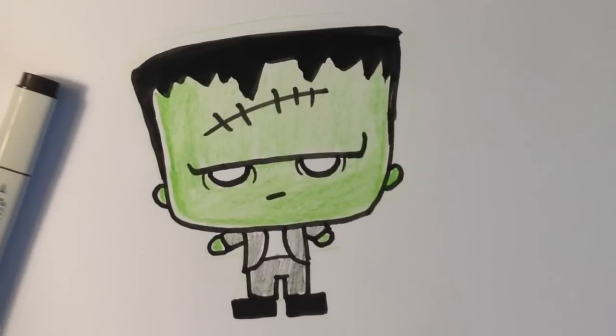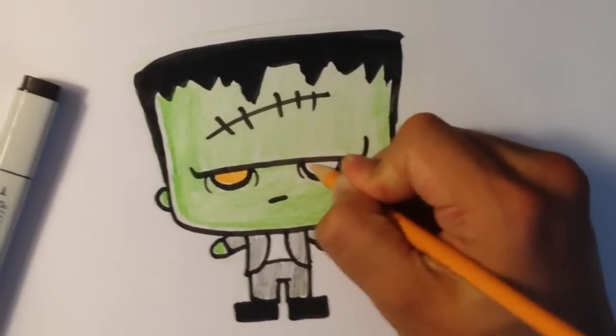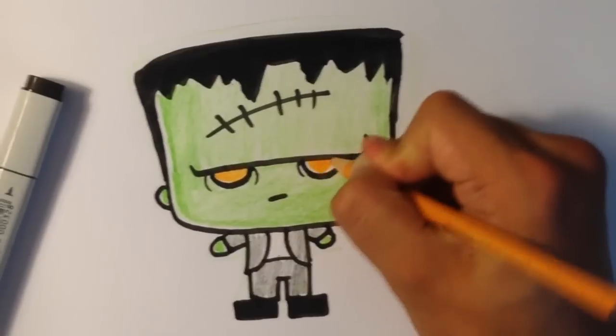And if you really want to do it, you can make his eyes... I don't have a yellow. Actually, I do have a yellow. You could make his eyes yellowy to kind of give it some... so they can pop out.